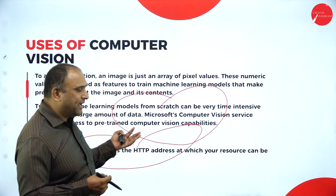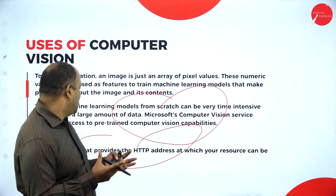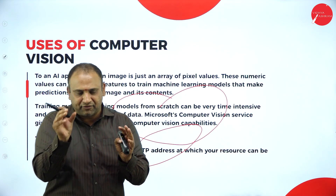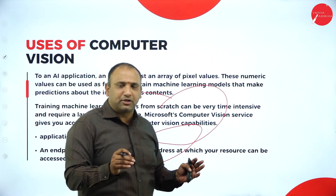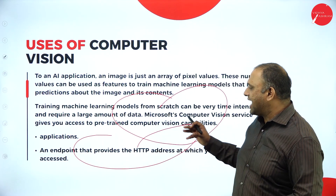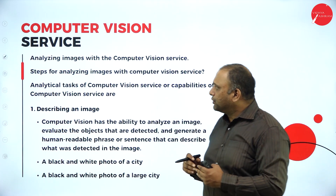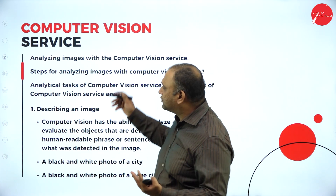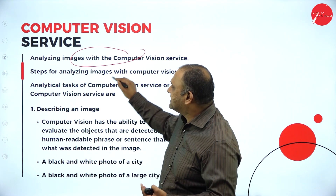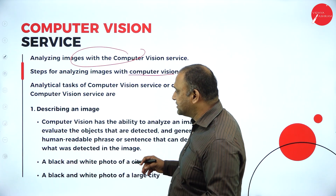Using the HTTP address, you would be able to understand where people are moving and track a resource's location — find out where exactly the movement is and how that particular thing is located. The computer vision service also covers analyzing images with it. The steps for analyzing images with the computer vision service — that is, the analytical services — begin with describing an image.